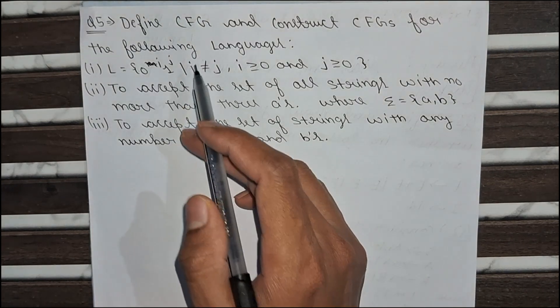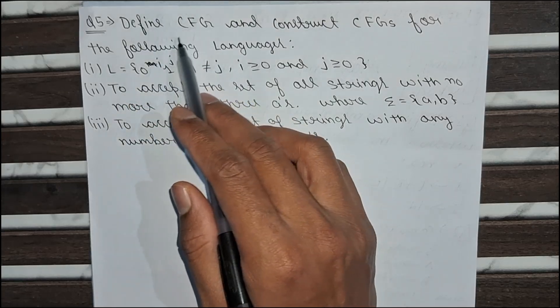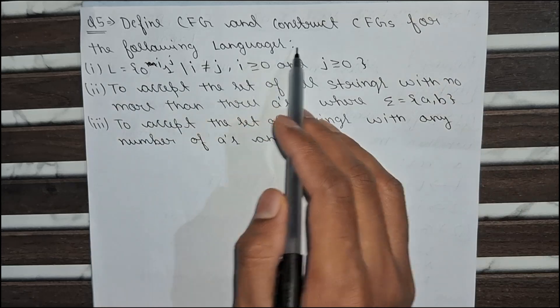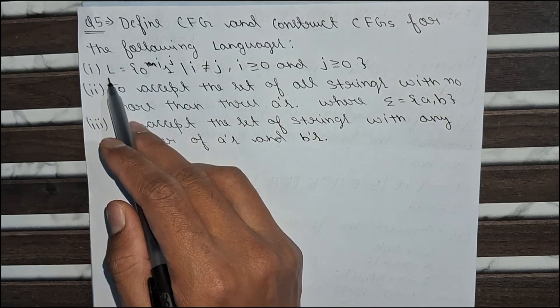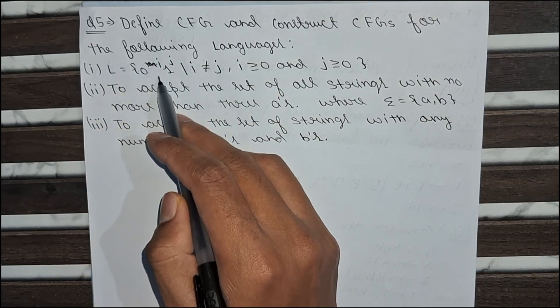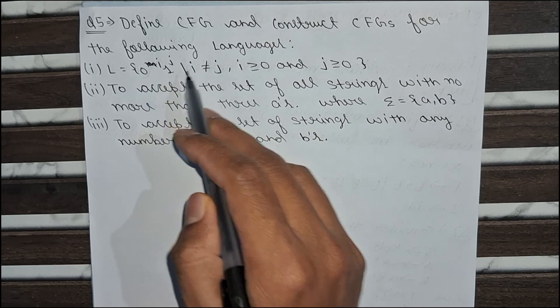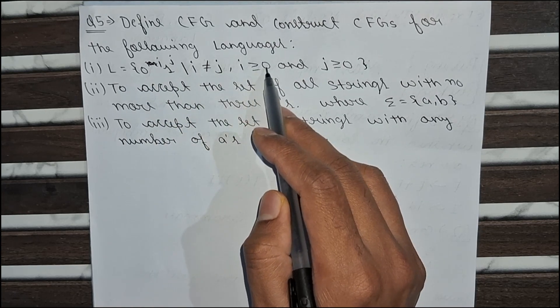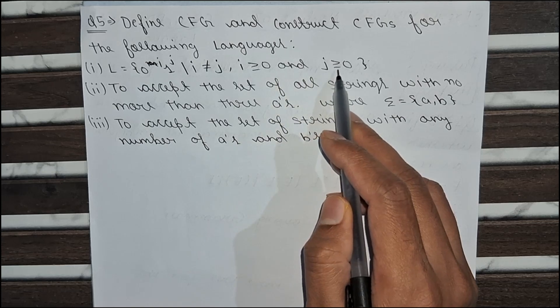Now the fifth and last question is define context free grammar and construct a context free grammar for the following languages. The first language given here is L is equal to 0 to the power i, 1 to the power j where i is not equal to j and i is greater than or equal to 0 and j is greater than or equal to 0.